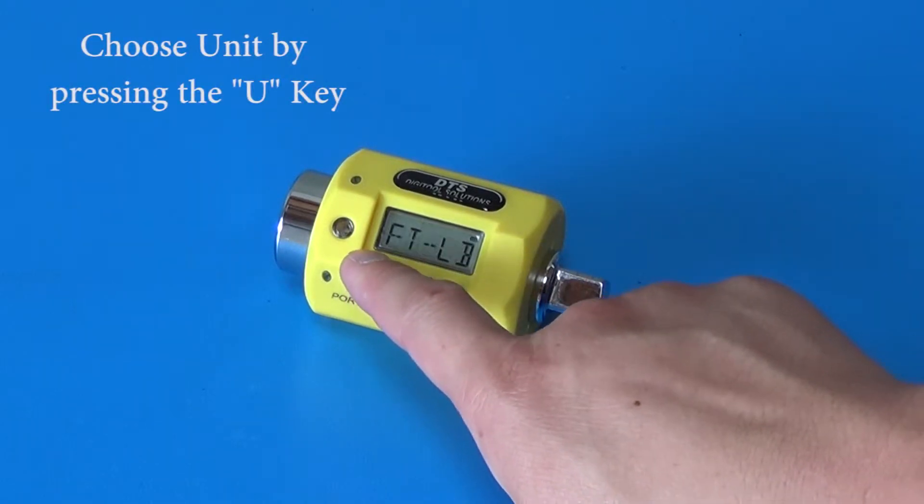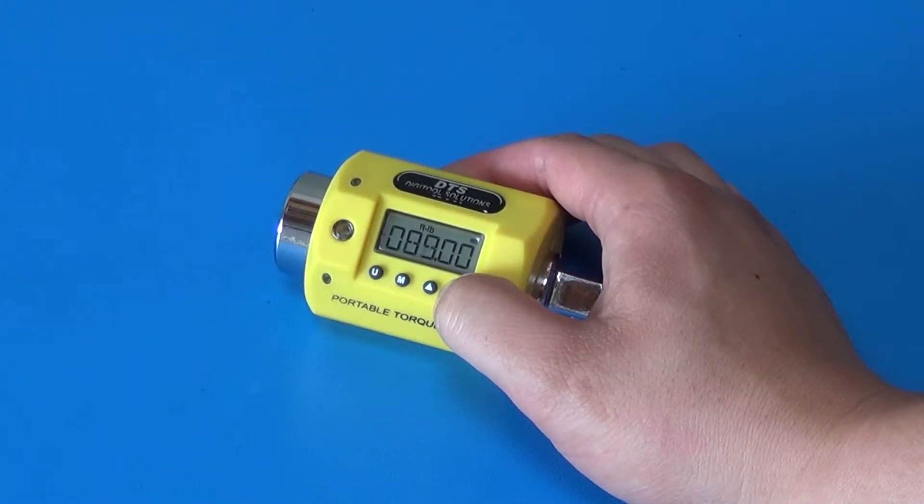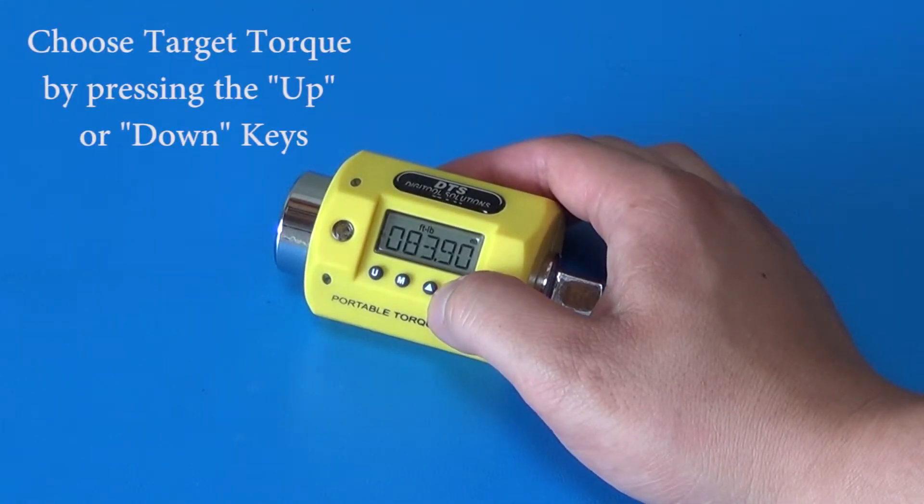Number 2, choose your unit: foot pound, inch pound, or newton meter. And number 3, use the up or down keys to choose your target torque.